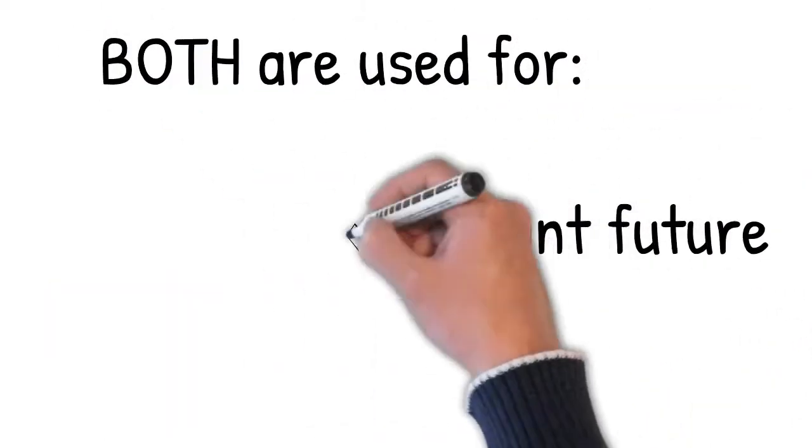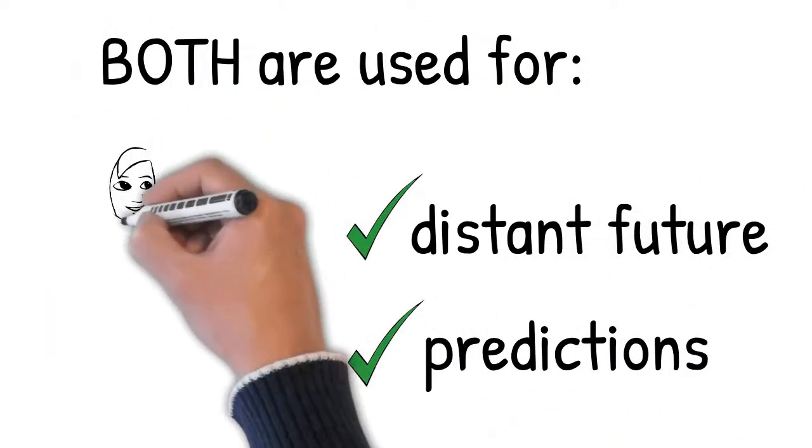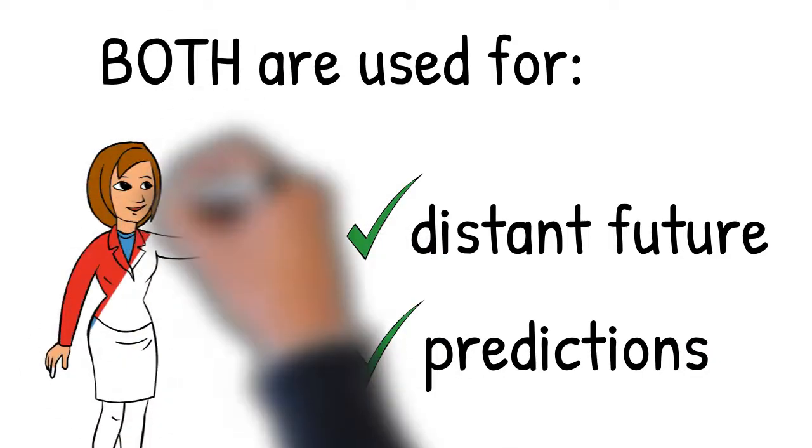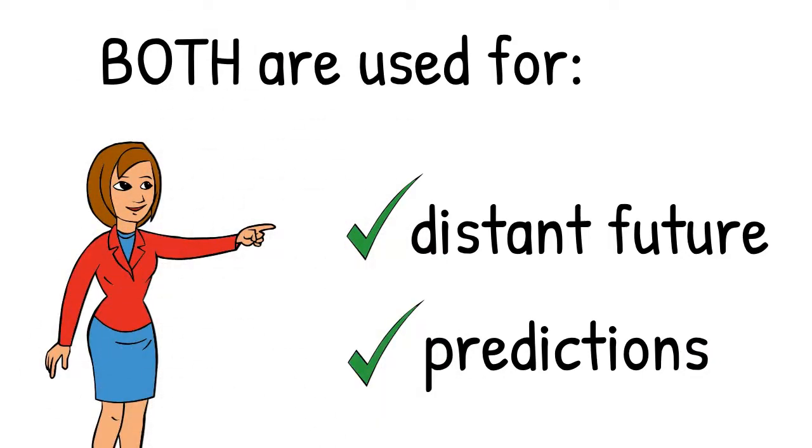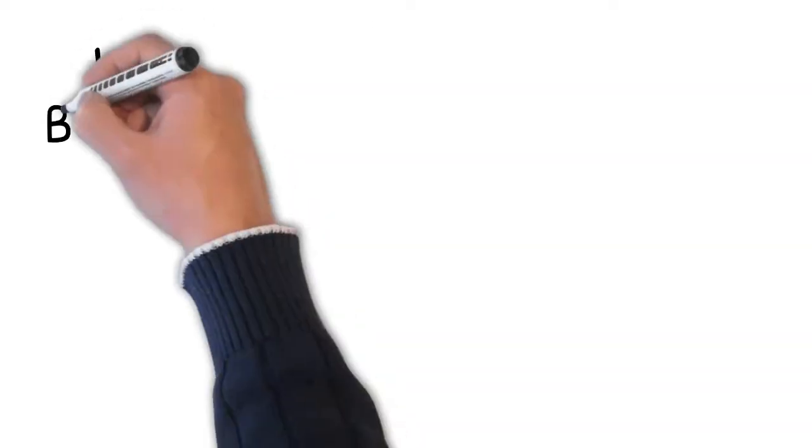Both will and be going to are used for the distant future and for predictions, and they are very similar in meaning, if not identical. So let's look more closely at that.